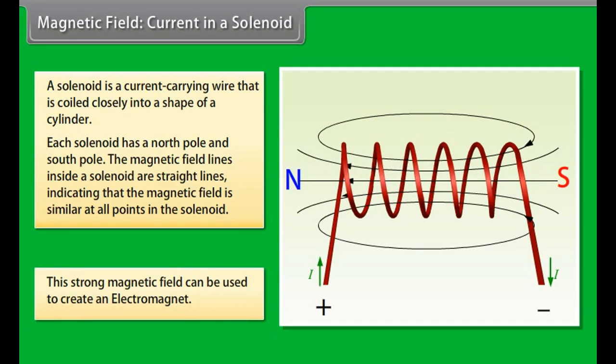This strong magnetic field in the solenoid can be used to magnetize magnetic materials. This type of a magnet is called an electromagnet.